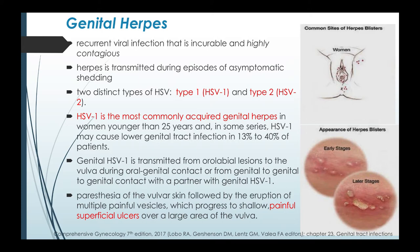First we have genital herpes, a recurrent viral infection that is incurable and highly contagious. Herpes is transmitted during episodes of asymptomatic shedding. There are two distinct types: HSV type 1 and HSV type 2. HSV-1 is the most commonly acquired genital herpes in women younger than 25 years old and may cause lower genital tract infection in 13 to 40 percent of patients. Genital HSV-1 is transmitted from oral labial lesions to the vulva during oral-genital contact, or from genital-to-genital contact. Paresthesia of the vulvar skin followed by the eruption of multiple painful vesicles, which progress to shallow painful superficial ulcers over a large area of the vulva, are commonly seen.